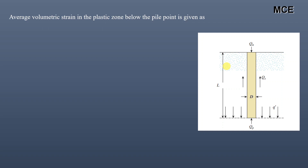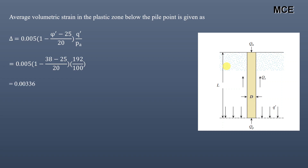The average volumetric strain in the plastic zone below the pile point is Δ = 0.005 × [1 − (φ' − 25) / 20] × (q' / p_a). Substituting the values of φ' and p_a, we get Δ = 0.00336.